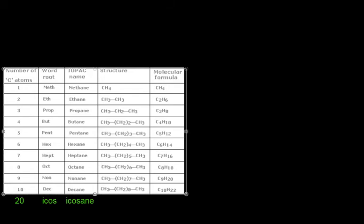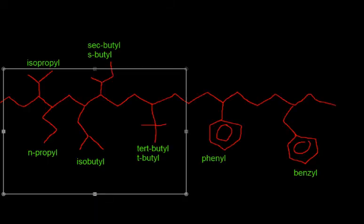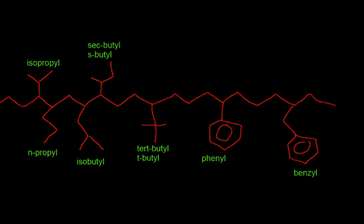Okay, other things you need to know are these groups here. Some people get these confused with ones similar to them. So isopropyl, you can see the prop, so that means 3 carbons. And you count the carbons: 1, 2, 3, and that matches with the prop. Lots of people try to count the carbon that's attached to the chain, which you don't. And then they call it a butyl, which it isn't.